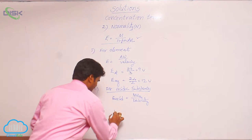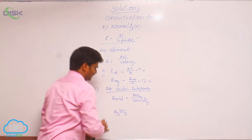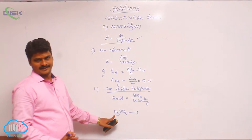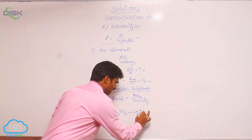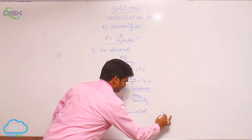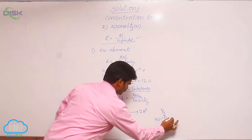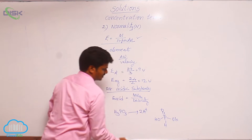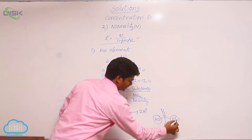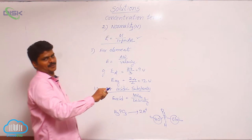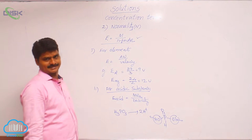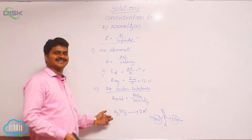Similarly, if you take H3PO3, it is orthophosphorous acid. There are 3 hydrogens total, but it can give only 2 H⁺ ions. Using the structure of orthophosphorous acid: P double bond O, OH, OH, and one H directly on phosphorus. There are only 2 OH groups, so these 2 hydrogens can be liberated as H⁺. Even though there are 3 hydrogens, it can give only 2 H⁺ ions, so its basicity is 2.